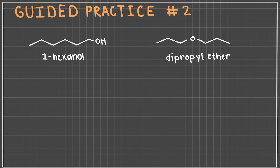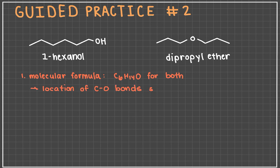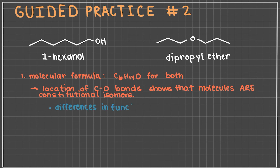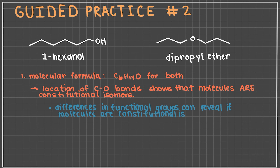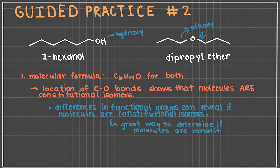Example two: we have 1-hexanol versus dipropyl ether. Looking at the skeletal structures of the two, a molecular formula of C6H14O can be deduced. It's quite obvious that the atomic structures differ because of the location of the carbon-oxygen bonds. Thus, these are constitutional isomers. In some instances, constitutional isomers can contain different functional groups. Here, 1-hexanol is an alcohol with a hydroxy group, and dipropyl ether is an ether with an alkoxy group. A great way of distinguishing constitutional isomers is finding different functional groups.